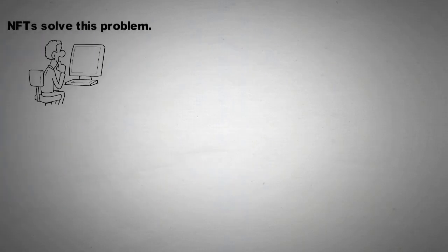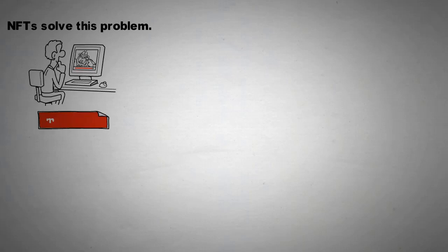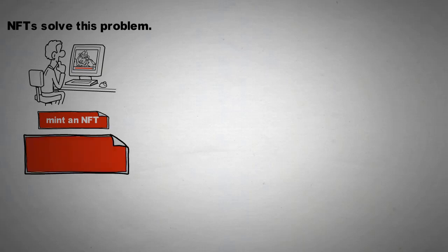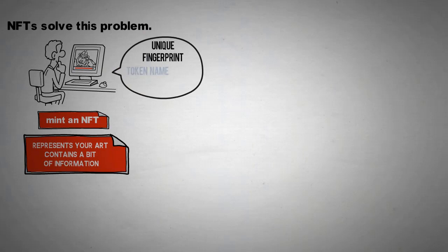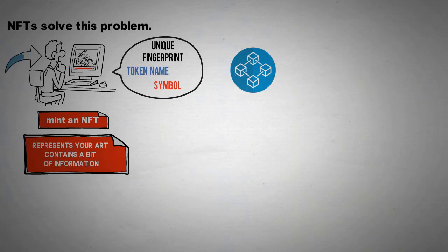Imagine that you made a piece of digital art — essentially a JPG — on your computer. You can create or mint an NFT out of this. The NFT that represents your art contains a bit of information about it, such as the unique fingerprint of the file, a token name, and a symbol. This token is then stored onto a blockchain, and you, the artist, become the owner.